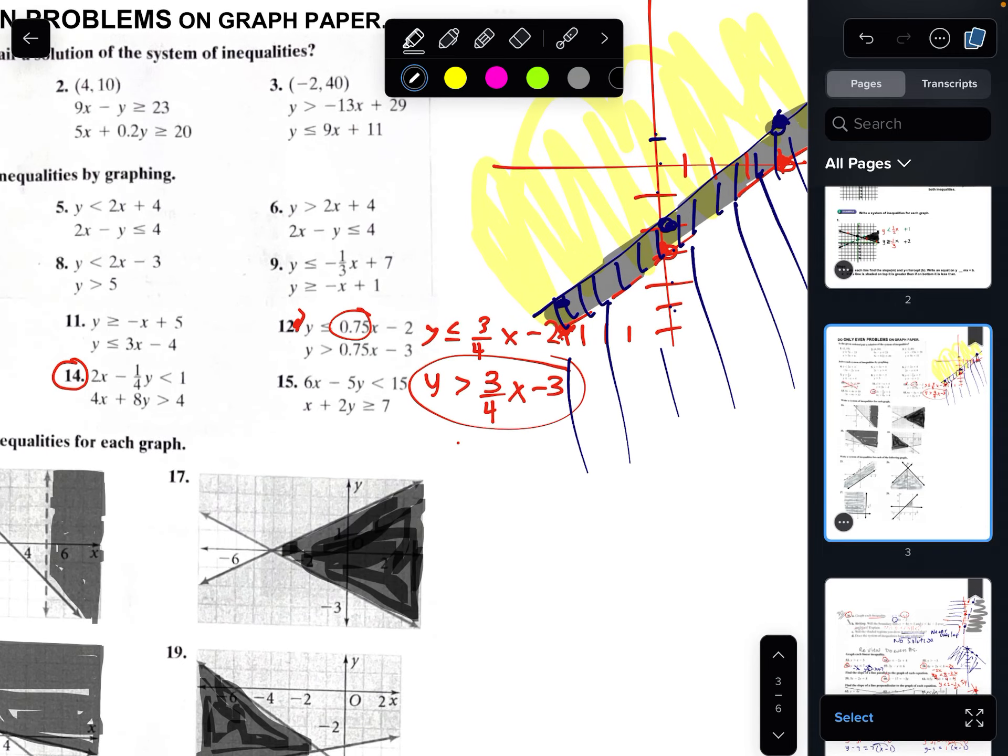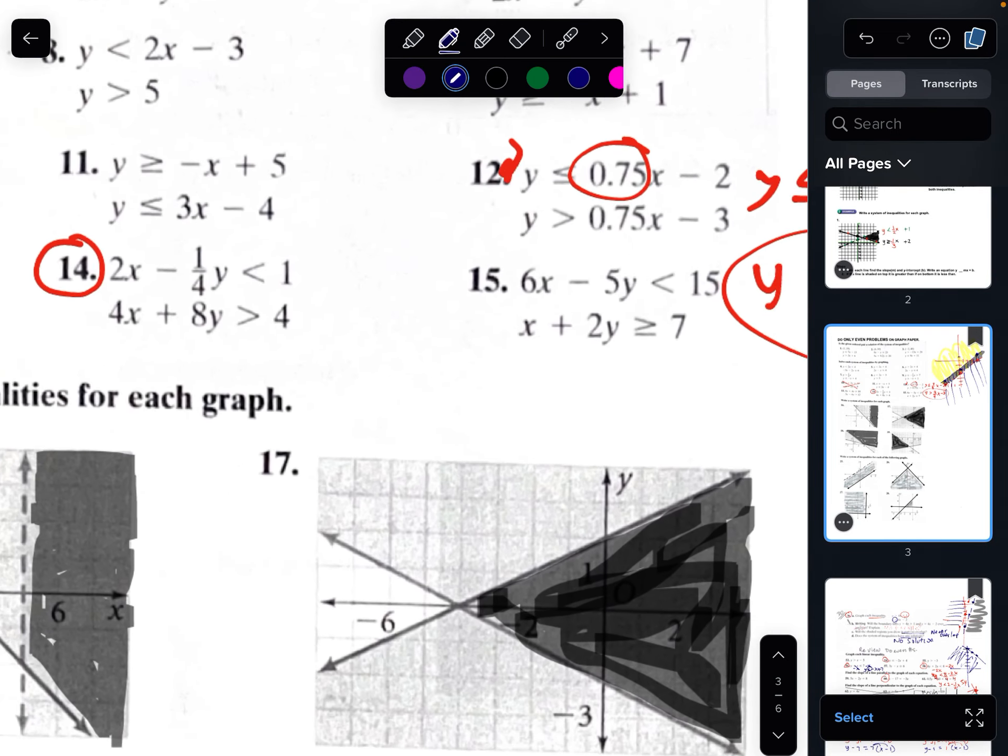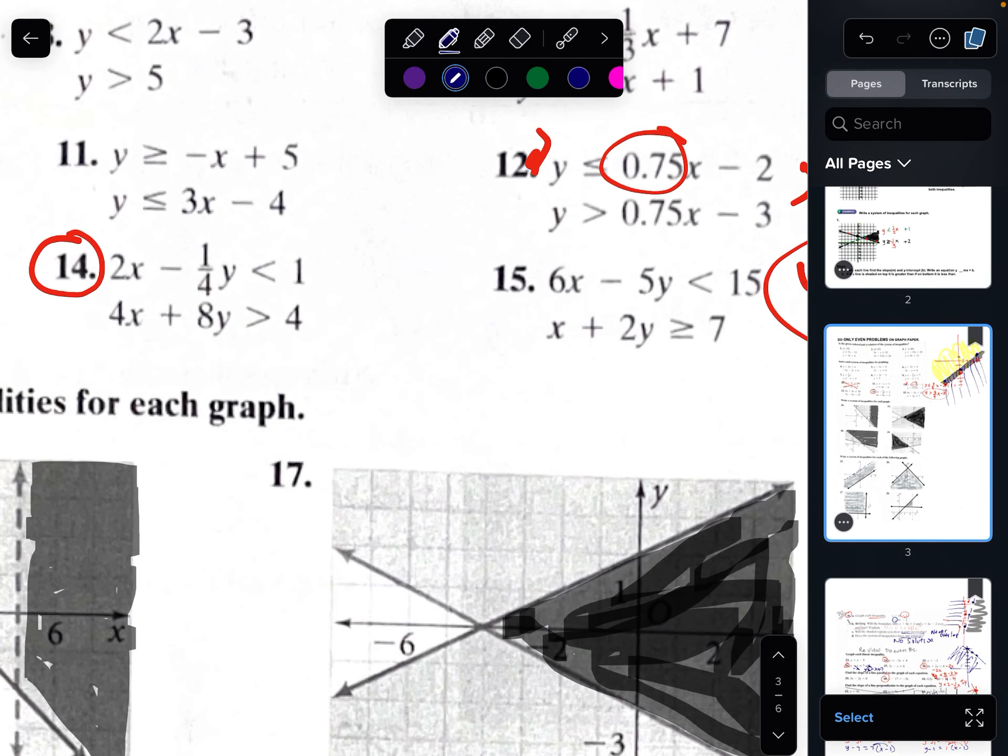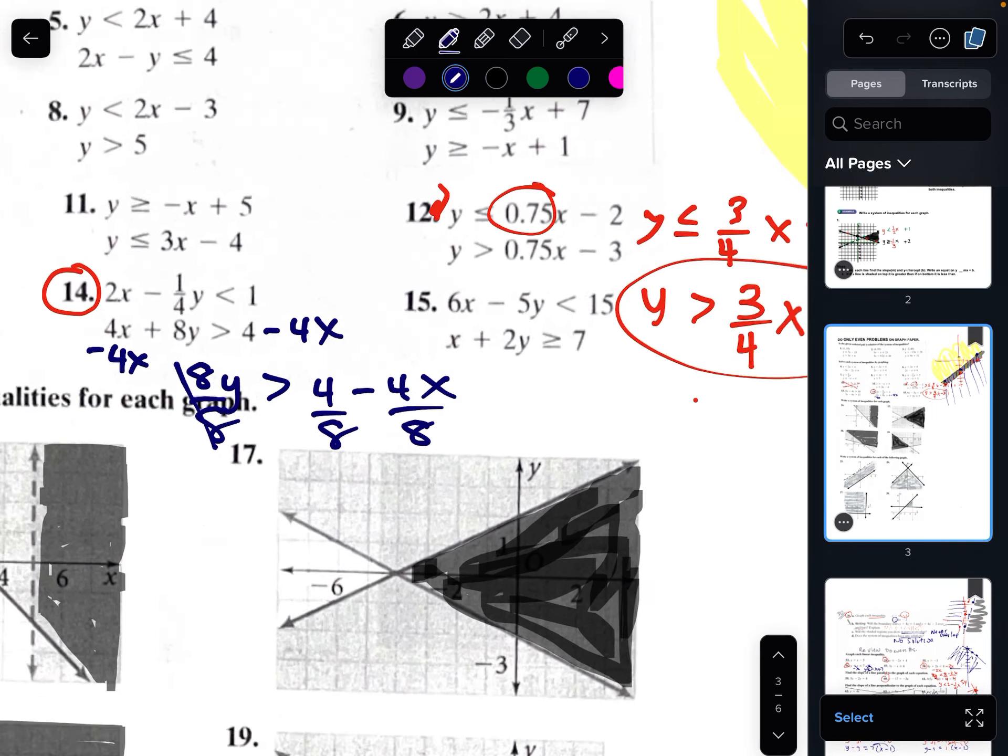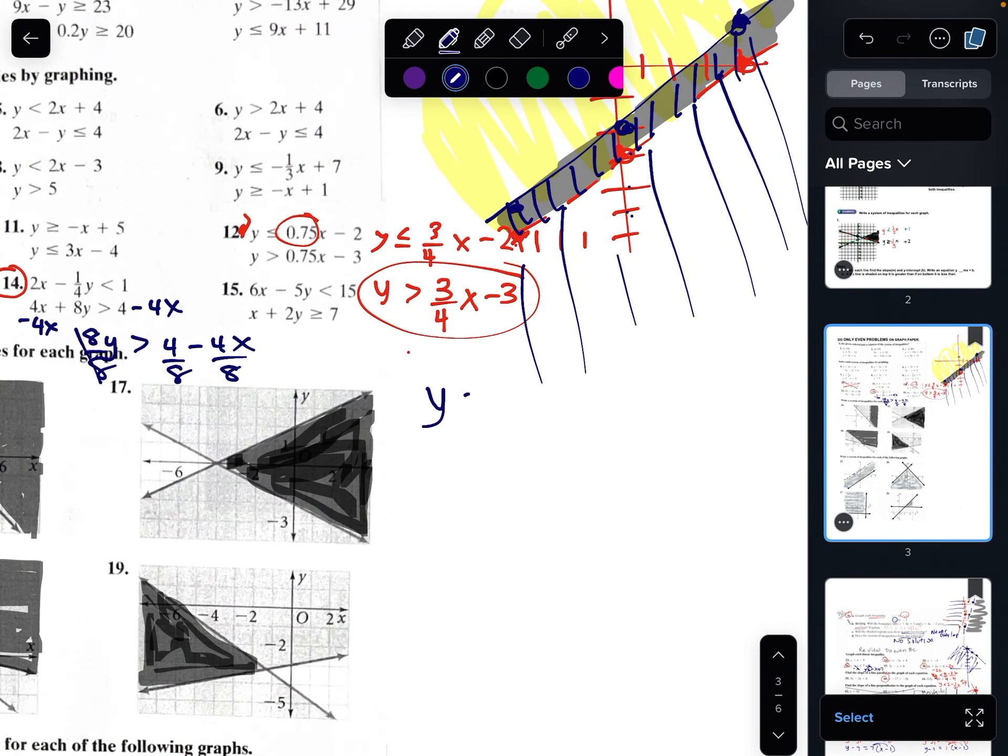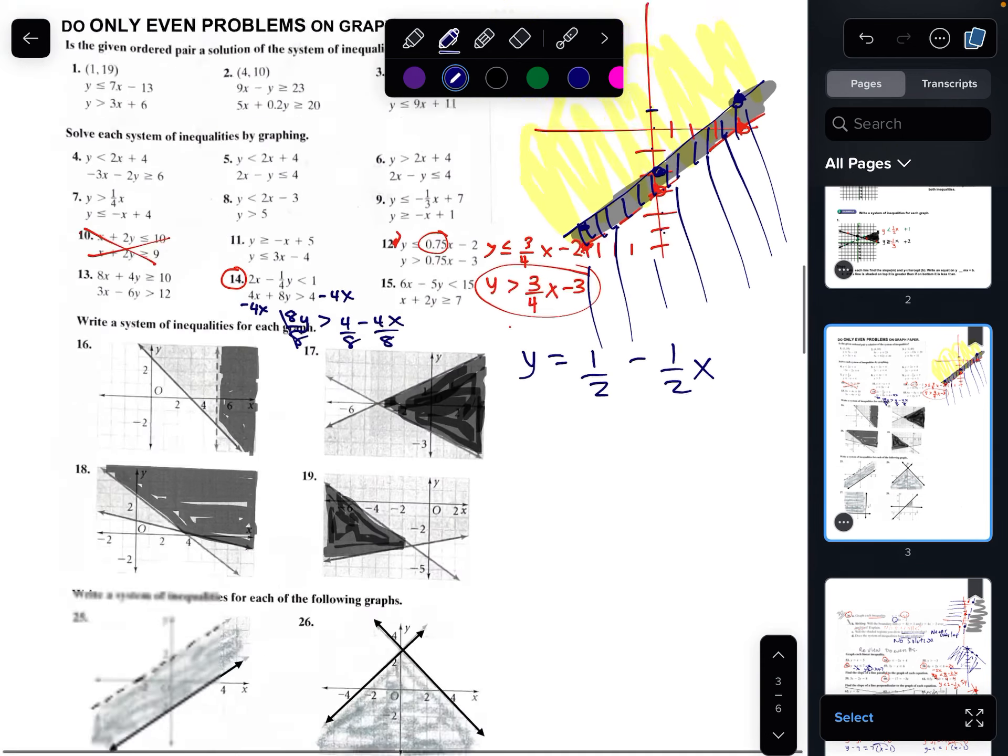Now, this one here, you have to solve for y, right? You're able to solve for y easily here. Then you got 8y greater than 4 minus 4x. Divide by 8. Okay. Y is 1 half minus 1 half x. Graphing that greater than.